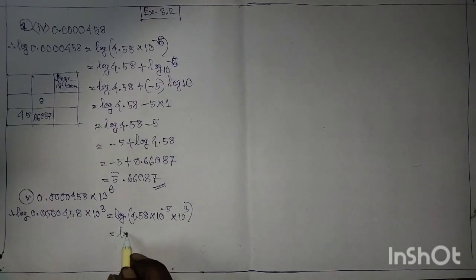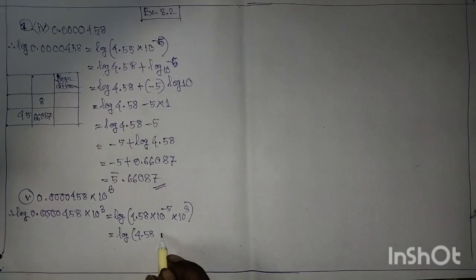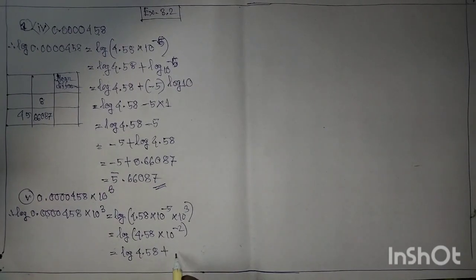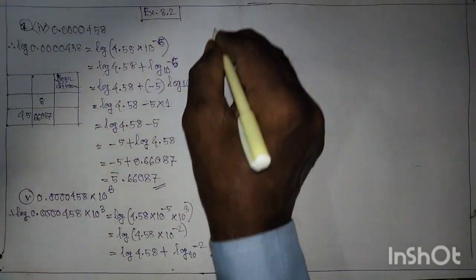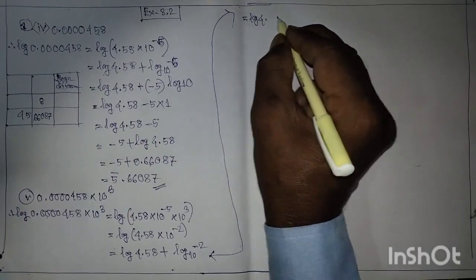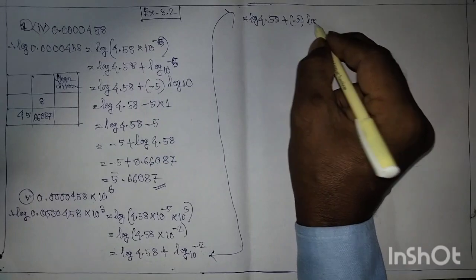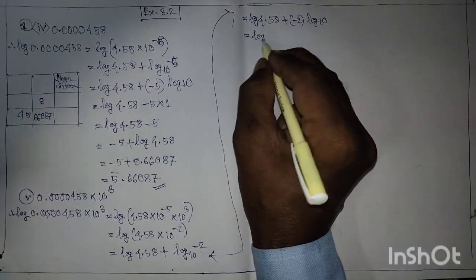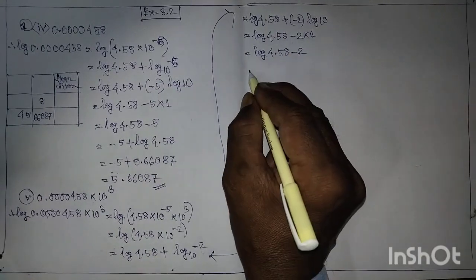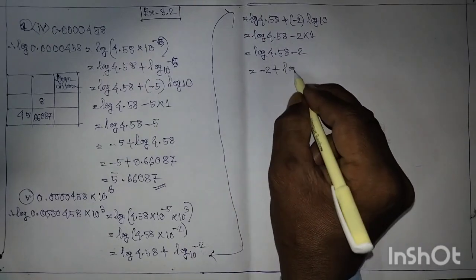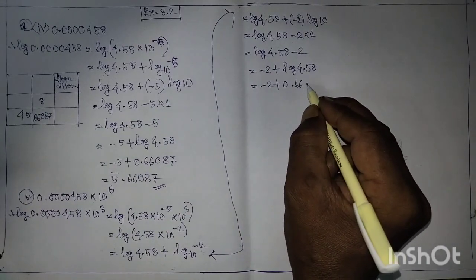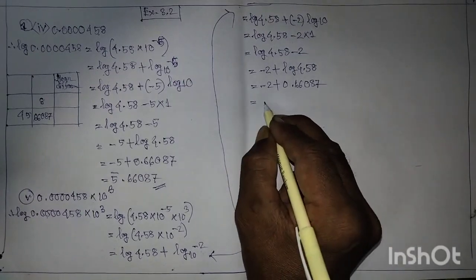Is equal to log 4.58. Is equal to log 4.58. Is equal to log 10. Is equal to log 4.58. Is equal to minus 2 plus 0.66087. Is equal to minus 2.